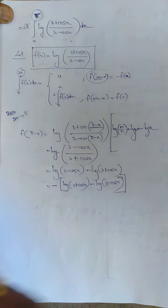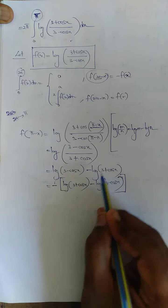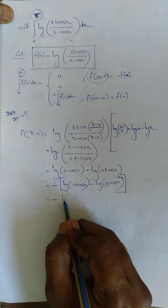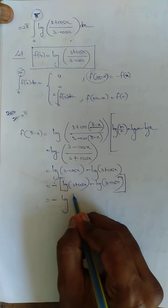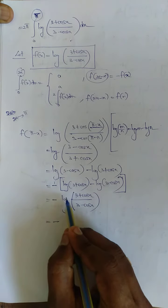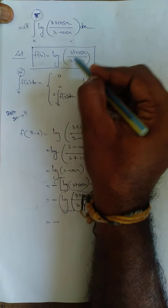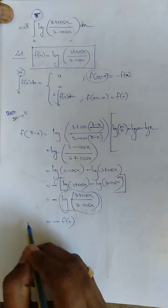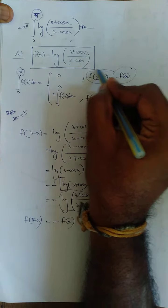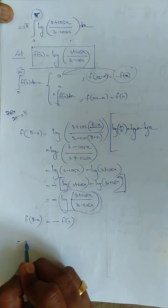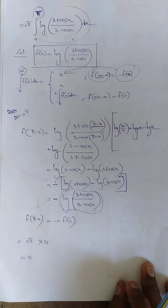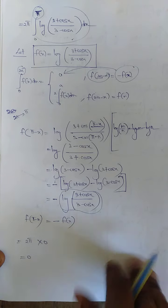Therefore f(π-x) = -f(x). Since f(2a-x) = -f(x), the integral ∫₀π f(x) dx = 0. So 2π·0 = 0. The required answer for this sum is 0. You need to practice this problem 2 to 3 times because it uses nearly 2 to 3 properties and can seem very tough.